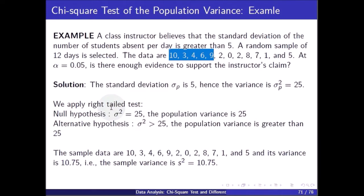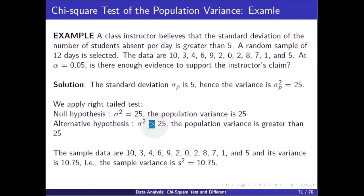The null hypothesis is sigma square equals 25, meaning the population variance is 25, since the null hypothesis must always use an equality. Since the instructor claims that the number of students absent per day is greater than 5, we use the right-tail test. The alternative hypothesis is sigma square greater than 25, i.e., the population variance is greater than 25.